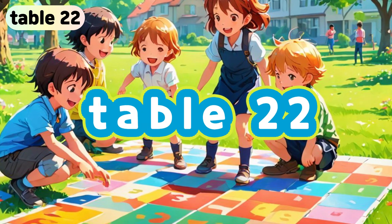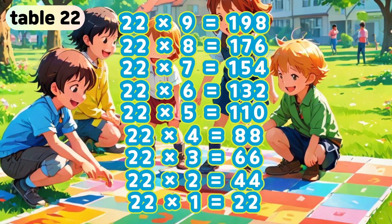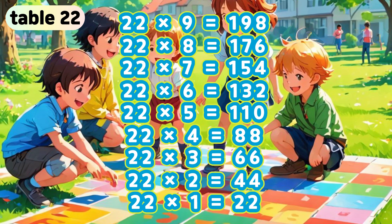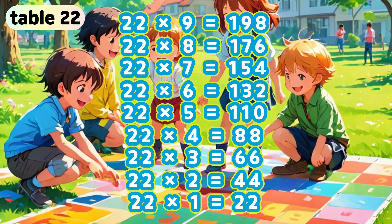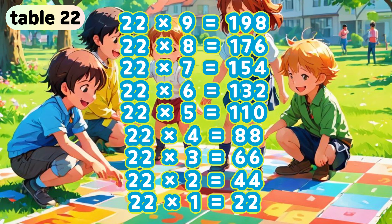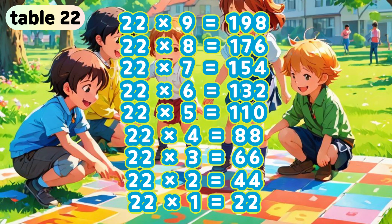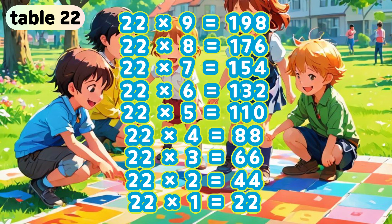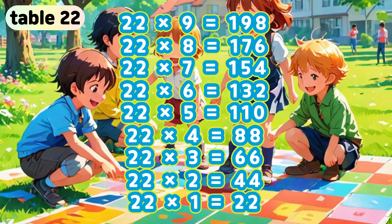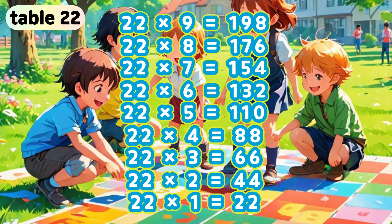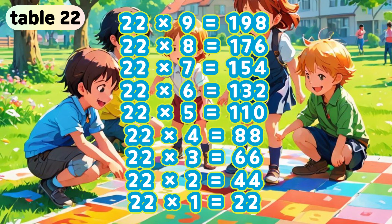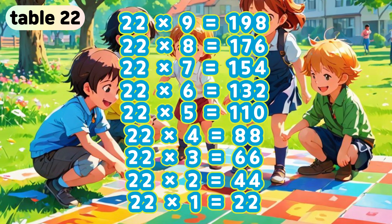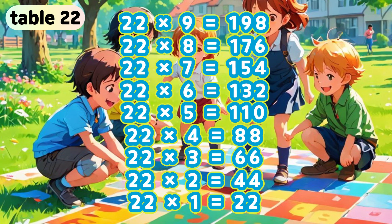Table 22. 22 times 9 is 198. 22 times 8 is 176. 22 times 7 is 154. 22 times 6 is 132. 22 times 5 is 110. 22 times 4 is 88. 22 times 3 is 66. 22 times 2 is 44. 22 times 1 is 22.